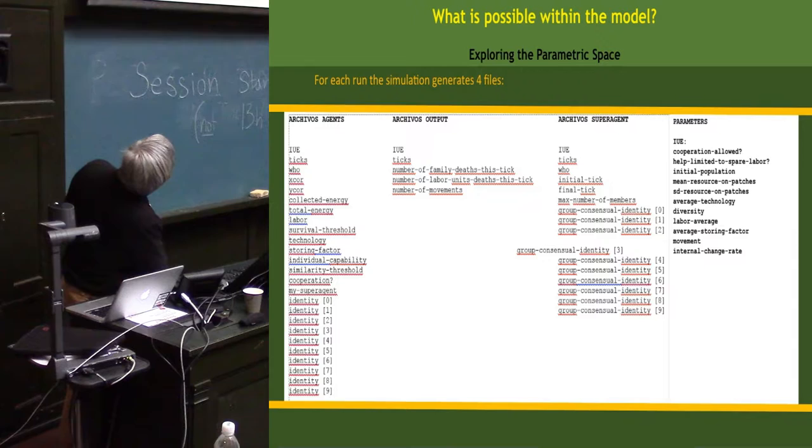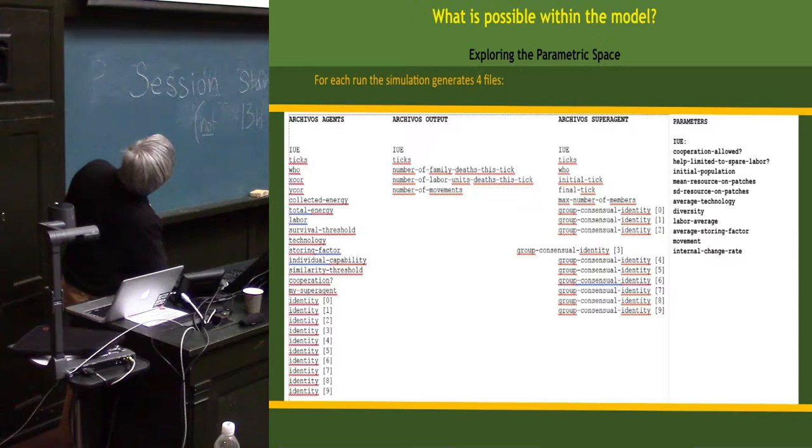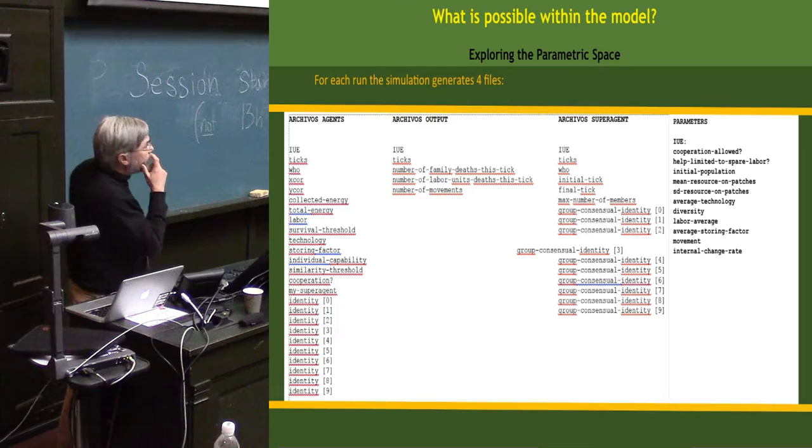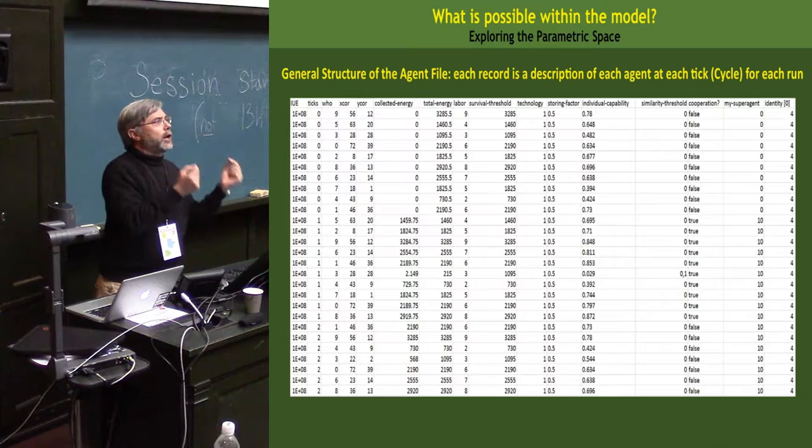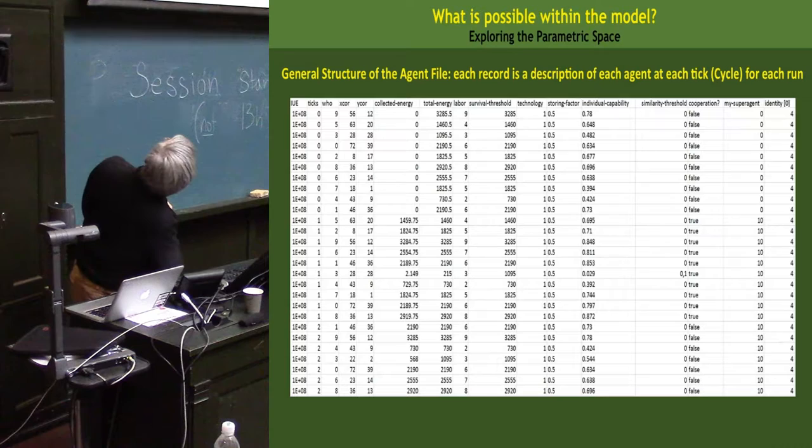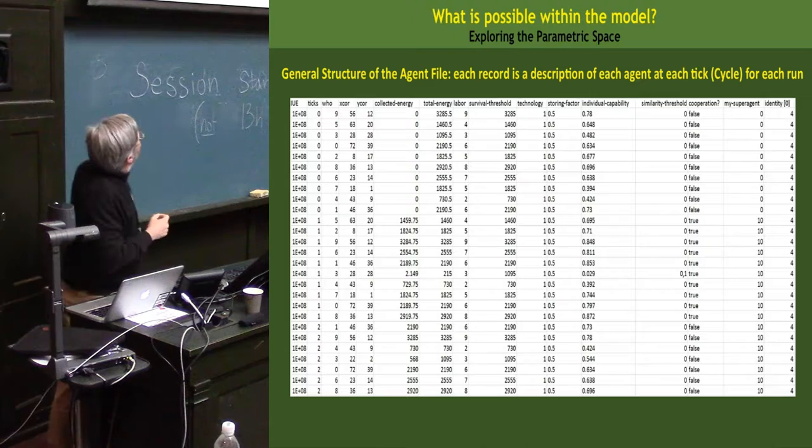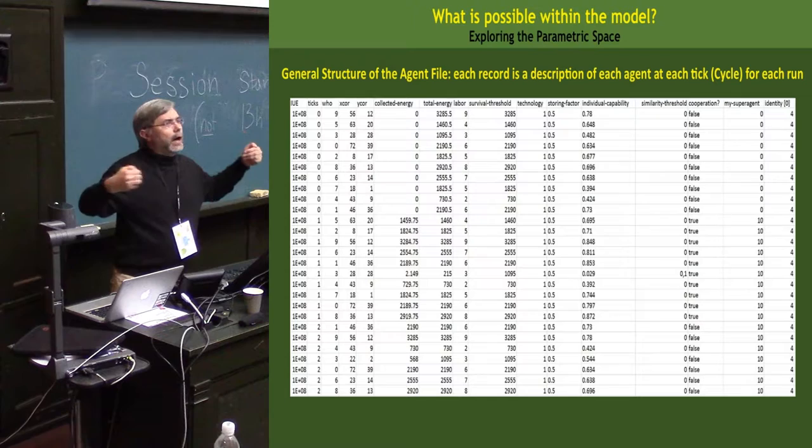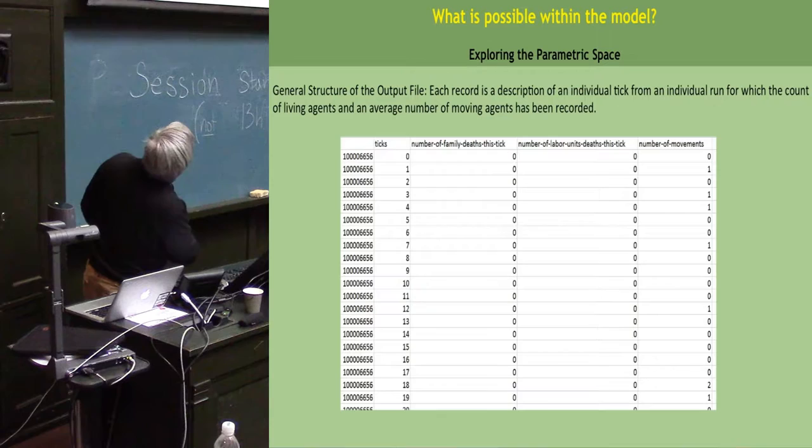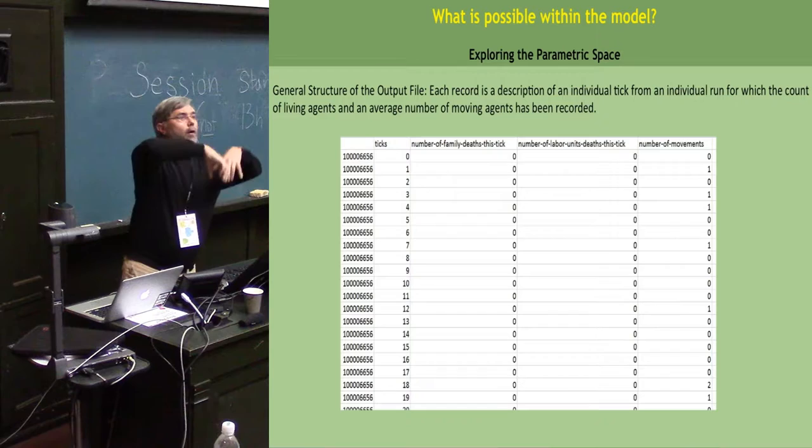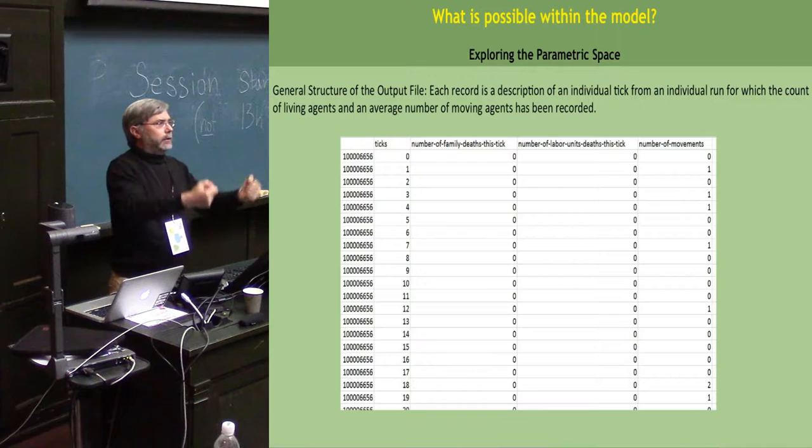Each run produces four different files. The most important thing to remember is that each file has a completely different structure. We have the agent file with all characteristics of agents changing at different cycles and ticks. Each agent can move and change coordinates, with different levels of energy at different moments.